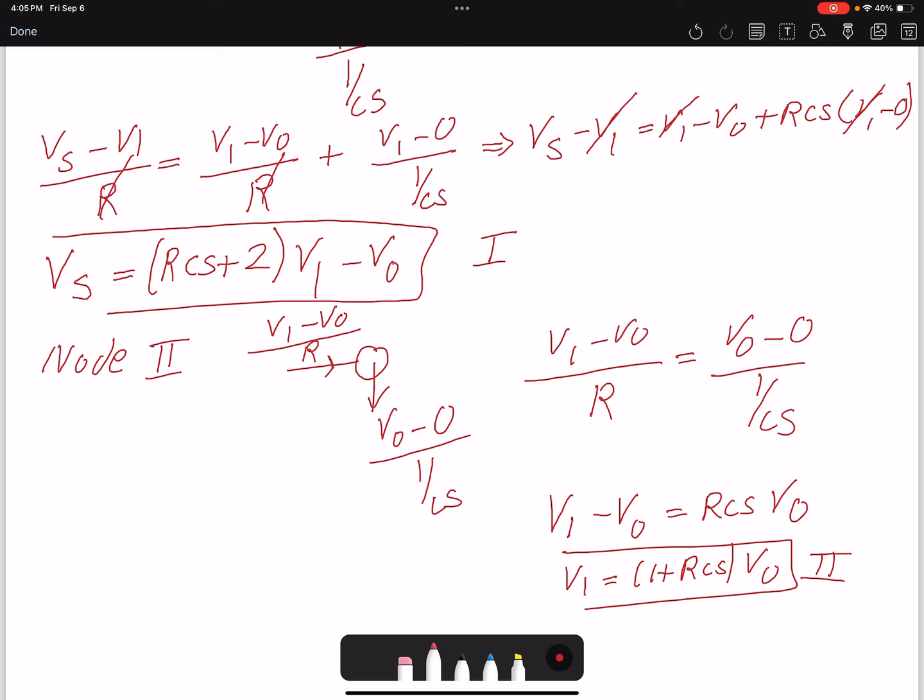If you remember, we didn't like V1 because that was an arbitrary voltage that we selected. We want to find a ratio between input and output, so I need to plug V1 into my equation 1.